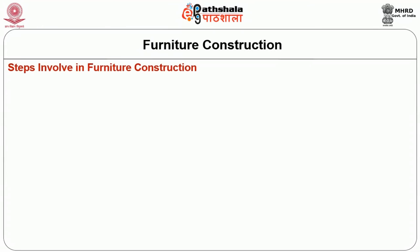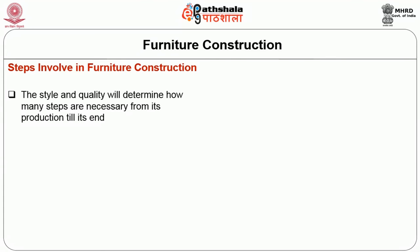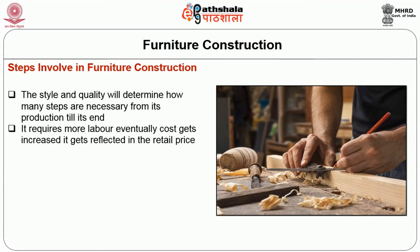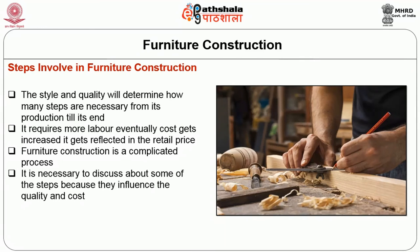Now I am going to elaborate on the steps involved in furniture construction. The style and quality of any particular furniture will determine how many steps are necessary from its production to its end. Naturally, the more labor involved the higher the cost, which gets reflected in the retail price. Furniture construction is a complicated process. The steps involved include shaping, carving, turning, fluting, reeding and joining.